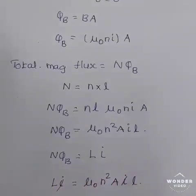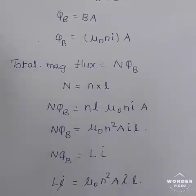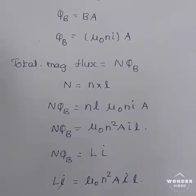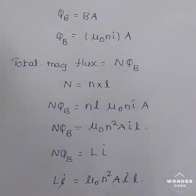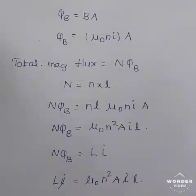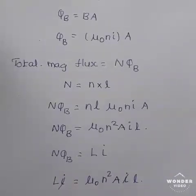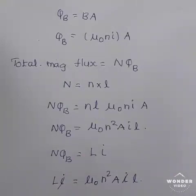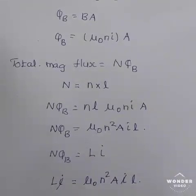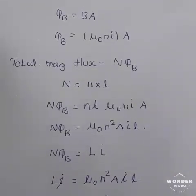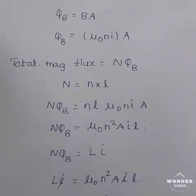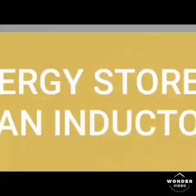The self-inductance depends on the turn density, cross-sectional area, length, and the medium present inside the solenoid. If the solenoid is filled with a dielectric medium of relative permeability μᵣ, then L = μ₀μᵣN²AL = μN²AL, where μ = μ₀μᵣ.